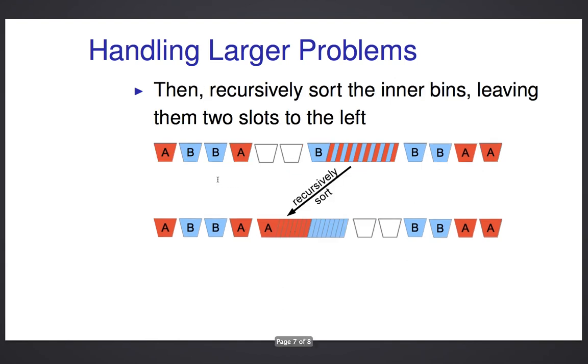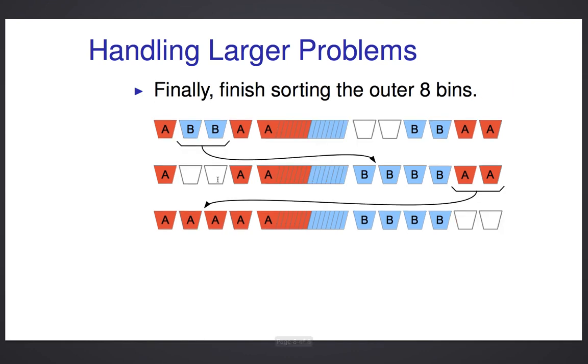So if we can recursively sort those using the same procedure, or if it's a small enough sequence just sort it directly, then we end up sliding it to the right, but we get it in sorted order, and then we can finish our sequence of moves necessary to sort the outer bins, and I've illustrated that here.